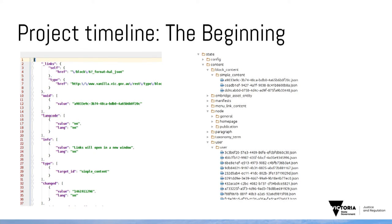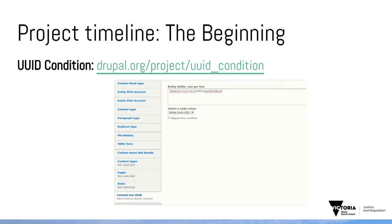With config and content sorted, there's a whole bunch of other stuff to handle. To make everything deployable, basically everything has to be related by UUID. One of the first pieces of work Simon did was write the UUID condition module, which allows us to place a block by UUID instead of path. That guarantees the block shows up in the same place on every environment, rather than relying on a path.